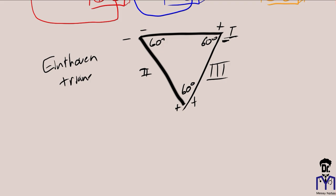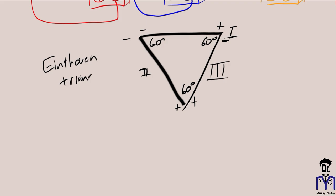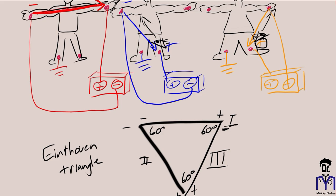These limb leads are also called bipolar leads because they are the only leads that use two electrodes that we place ourselves. This will make more sense later.